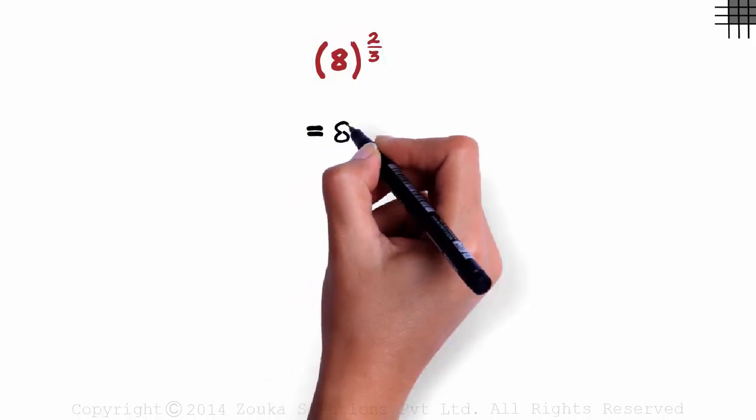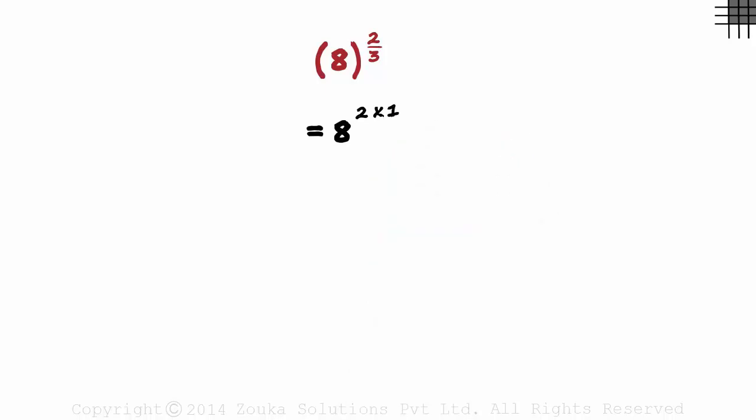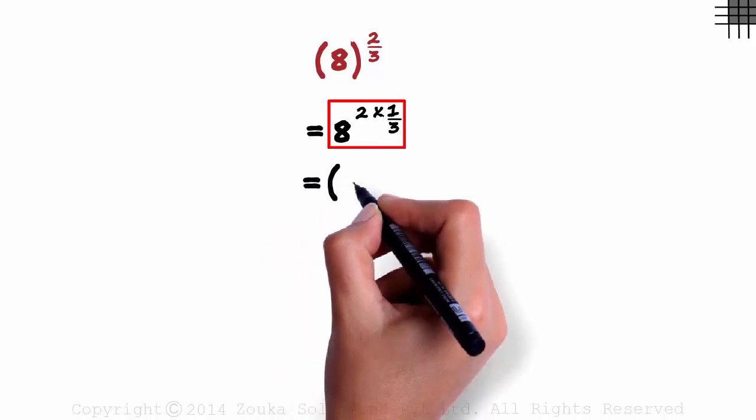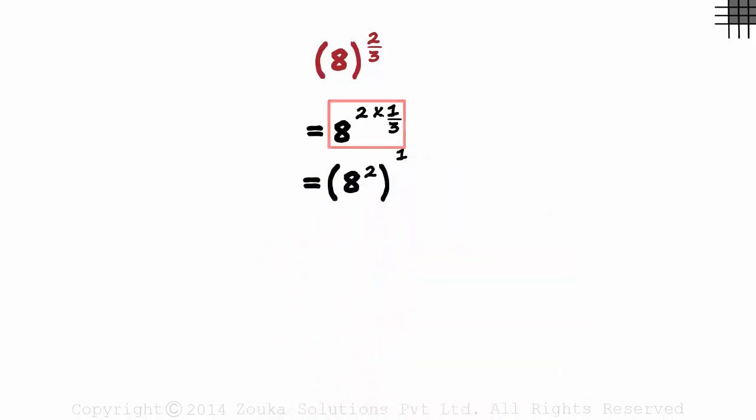We can write it as 8 raised to 2 times 1 by 3. It's the same. 2 by 3 is the same as 2 times 1 by 3. And based on the power law we saw, this can be written as 8 squared raised to 1 by 3. This was in the A raised to M times N form, and this is in the A raised to M the whole raised to N form.